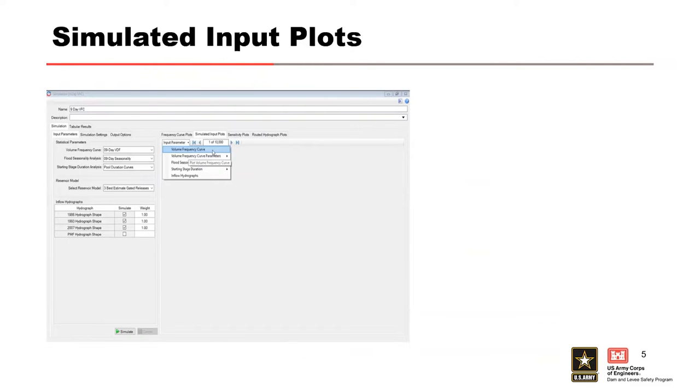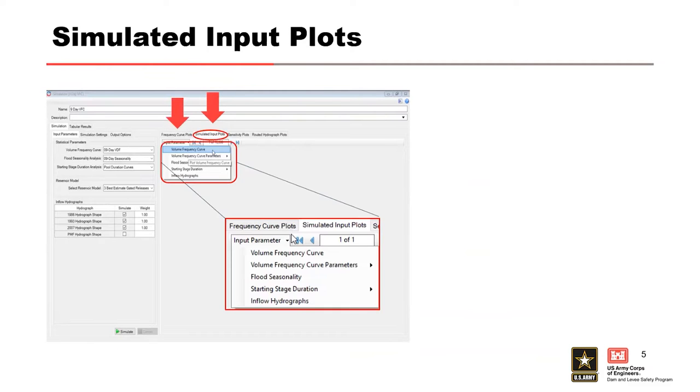First step, where do we get this information? Next to the frequency curve plot, there is the simulated input plots tab. When you first navigate to this tab, it's going to be empty until you select one of the input parameters from the drop-down menu, and then it will populate the plot.